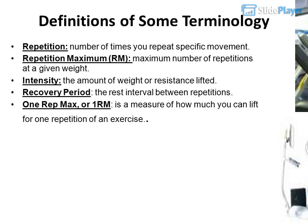Definitions of some terminology: Repetition — the number of times you repeat a specific movement. Repetition Maximum (RM) — the maximum number of repetitions at a given weight. Intensity — the amount of weight or resistance lifted. Recovery period — the rest interval between repetitions. 1 Rep Max (1RM) — a measure of how much you can lift for 1 repetition of an exercise.